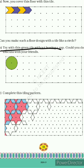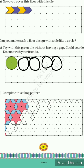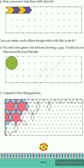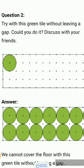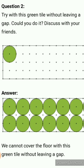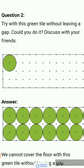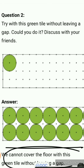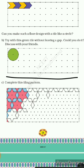Now try with this green tile without leaving a gap — could you do it? Discuss with your friends. You have one green circular-shaped tile and aapko is se yeh poora floor cover karna hai. Isme koi gap nahi rehna chahiye. When you cover it, the floor looks like that with the green tile pattern.